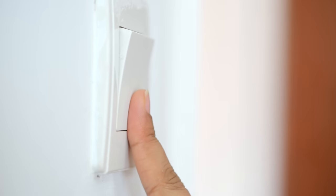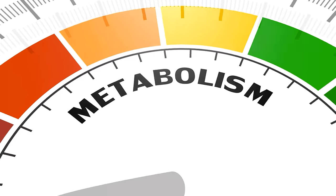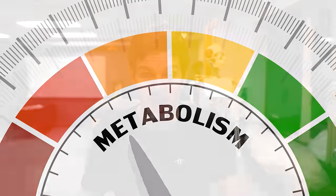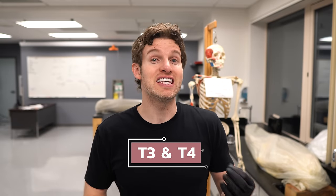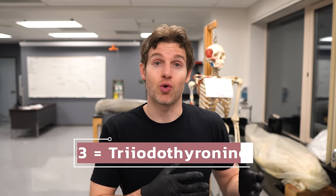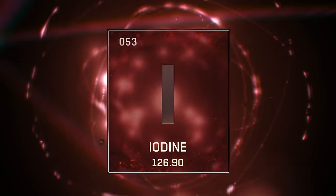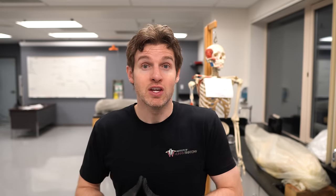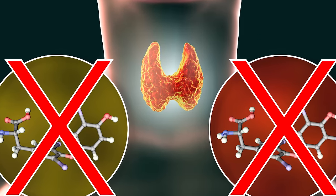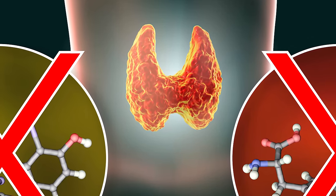When the thyroid gland is activated, it secretes the main thyroid hormones, which have incredibly powerful metabolic effects on multiple structures and tissues throughout the body. These hormones are called T3 and T4 — T3 stands for triiodothyronine and T4 stands for tetraiodothyronine. Triiodothyronine has three atoms of iodine, and tetraiodothyronine has four atoms of iodine. If you have an iodine deficiency, you can't synthesize these hormones, which could cause all sorts of thyroid-related functional problems.